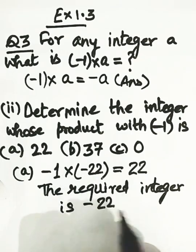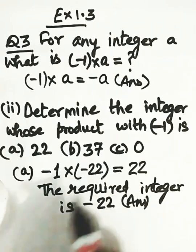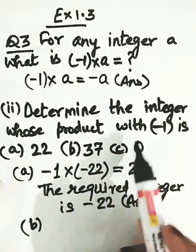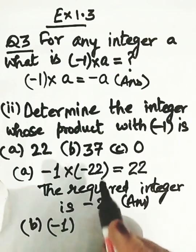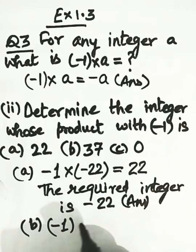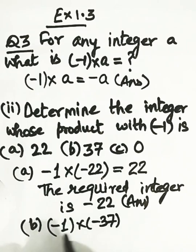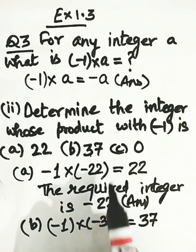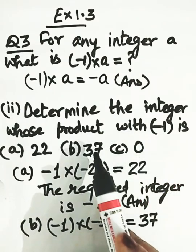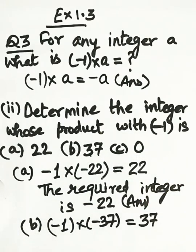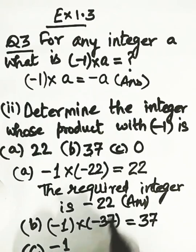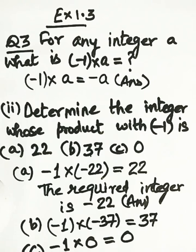Similarly for part b, the answer is 37. If we multiply minus 1 by minus 37, then negative times negative gives positive 37. So the integer multiplied with minus 1 to get 37 is minus 37. For part c, the answer is 0: minus 1 multiplied by 0 gives 0. This question is done. Now we will discuss question number 4.